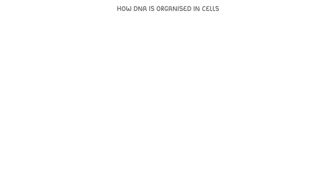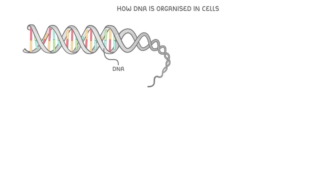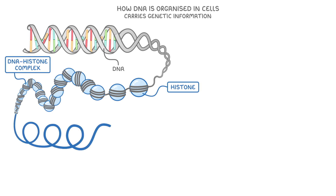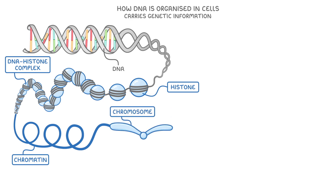Let's start with how DNA is organised in cells. DNA is a really long molecule that carries our genetic information, and because it's so long and we have multiple DNA molecules in every cell, it needs to be tightly packed in order to fit into our cells. DNA wraps around proteins called histones to form a DNA-histone complex. This complex then coils up even further into a structure called chromatin, and coiling it up like this helps to pack the DNA into chromosomes.